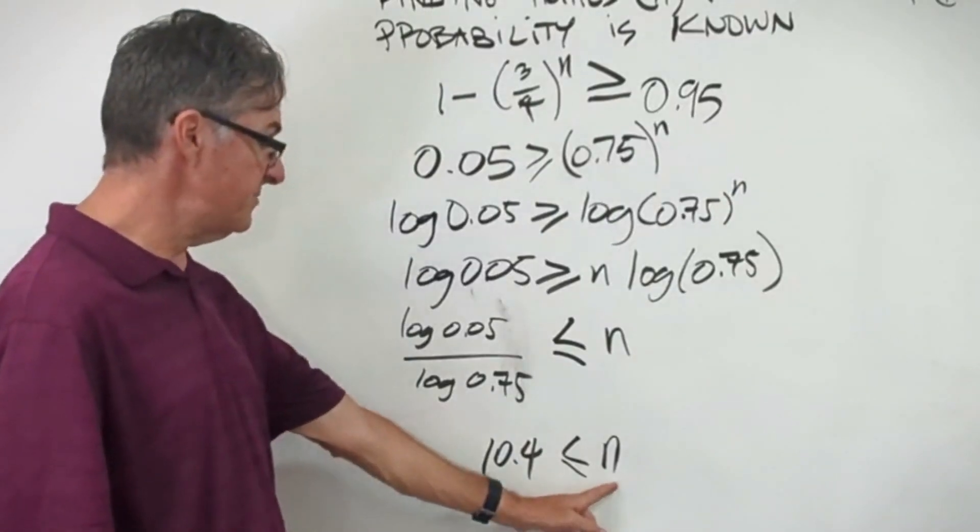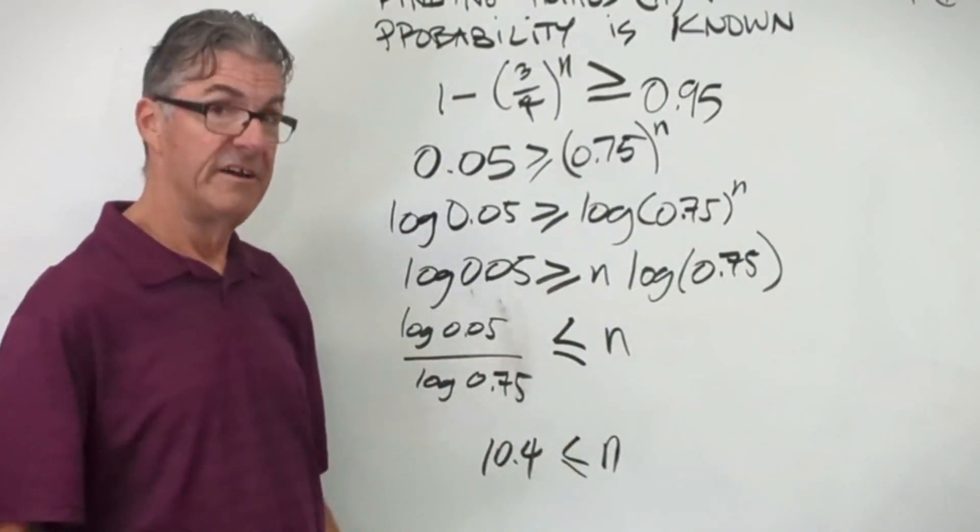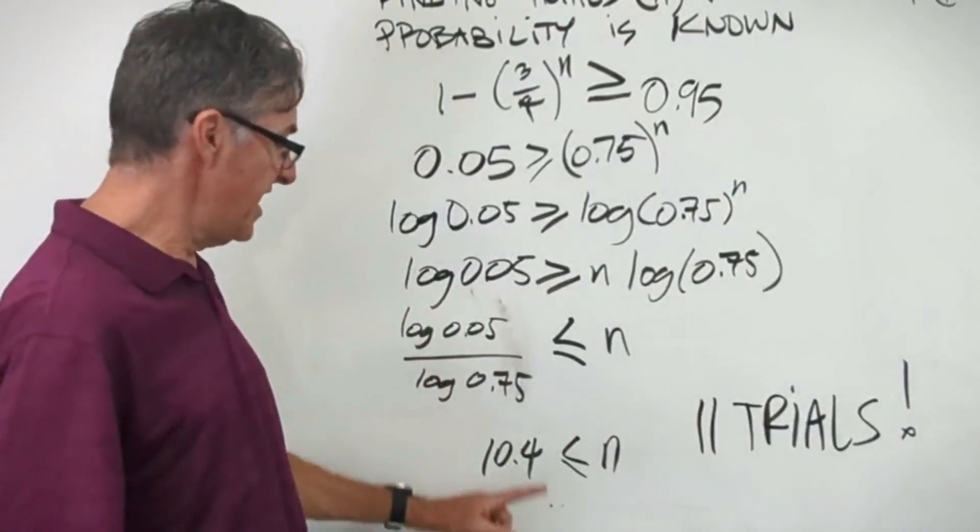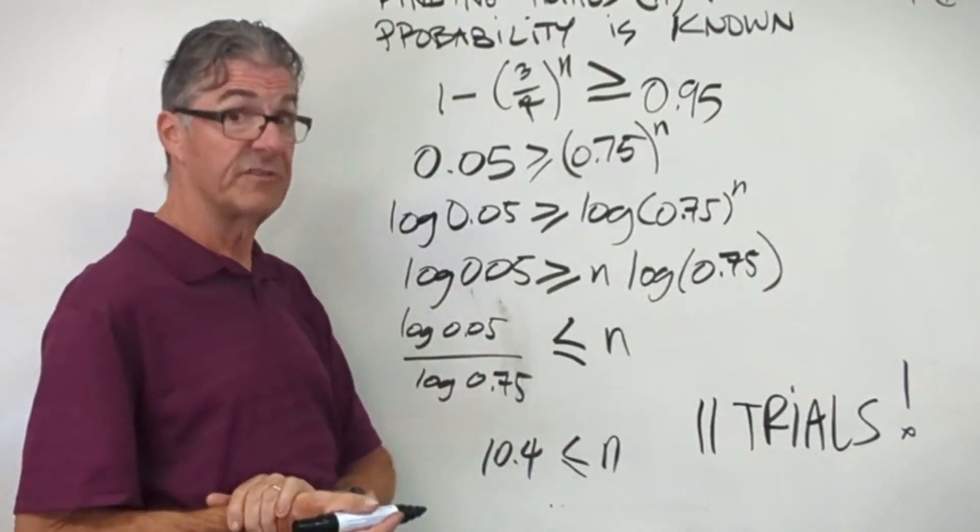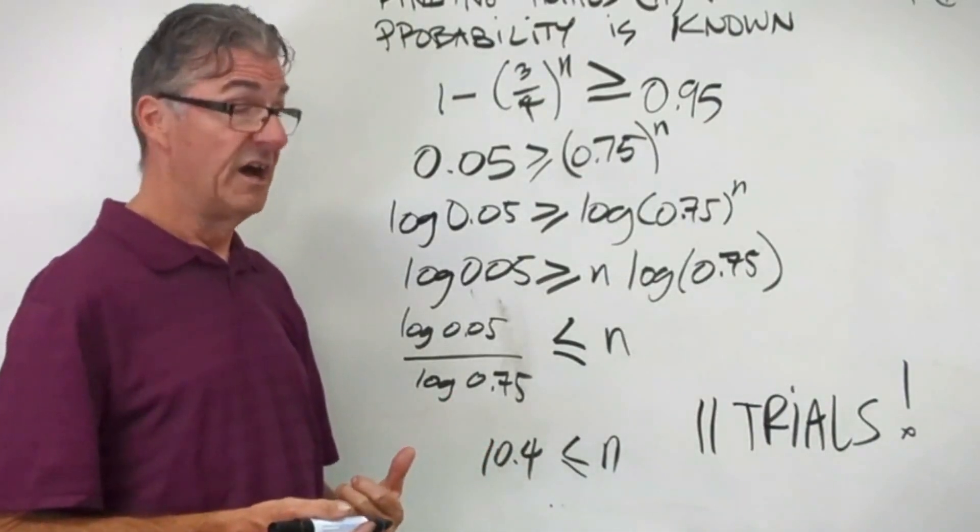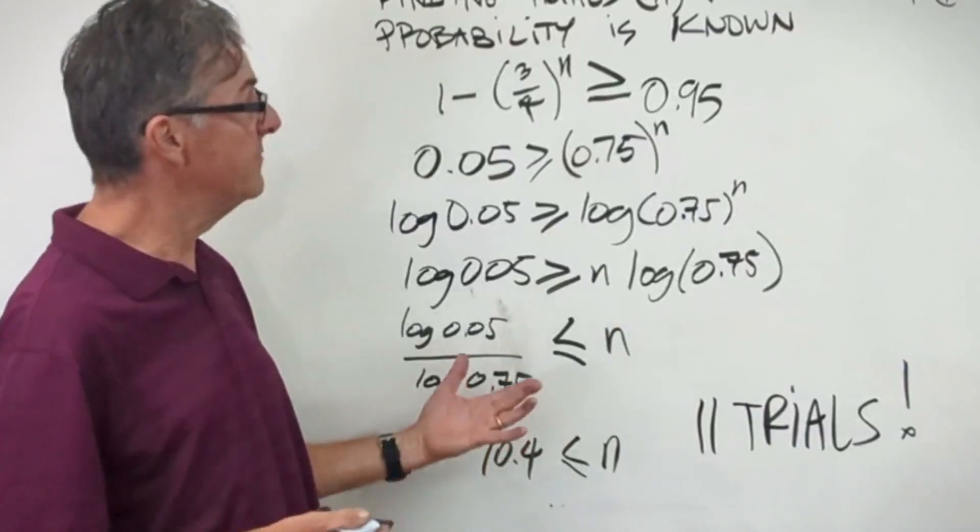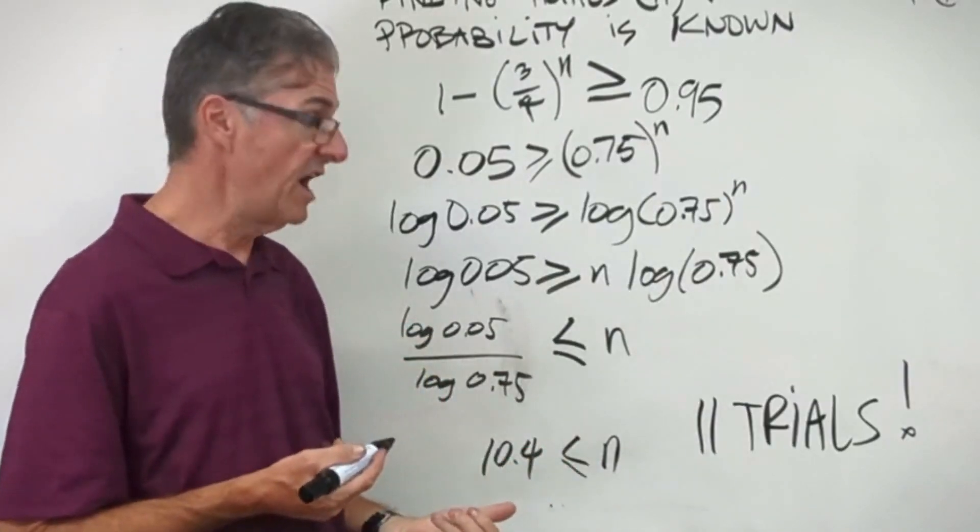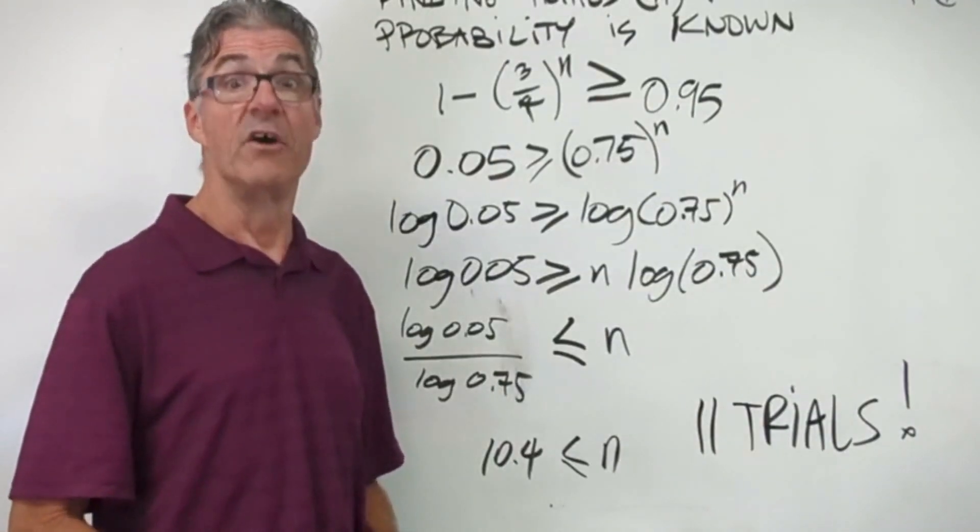When I do that, I get n must be greater than or equal to 10.4. So I have my answer. Or do I? Think about that for a minute. What is the answer to this problem? The answer is that I need at least 10.4 trials to get a 0.95 chance of pulling a rose from this box. I can't do 10.4 trials. I can do 10 or 11. So I'm going to need to go to 11 trials. Now my probability is going to be a little bit more than 0.95, but that's okay. The question was at least 0.95. So I need to do this 11 times to have a 95% or better chance of getting one rose.